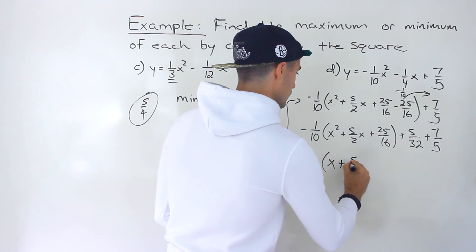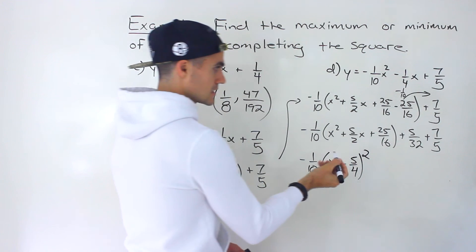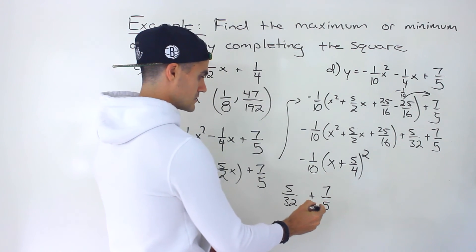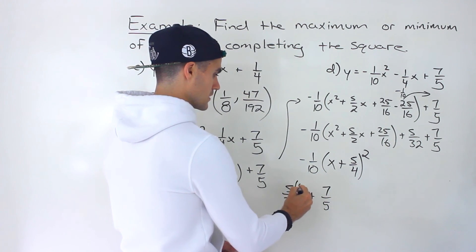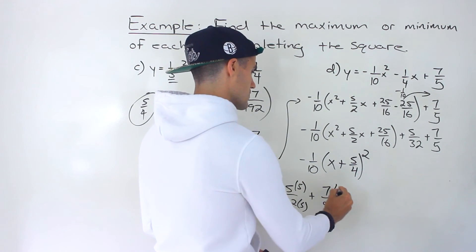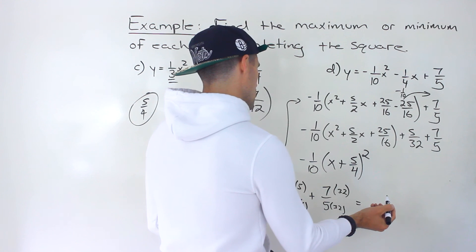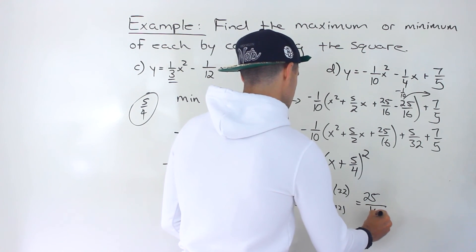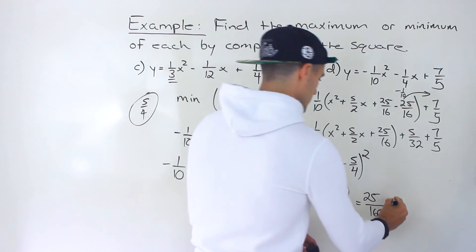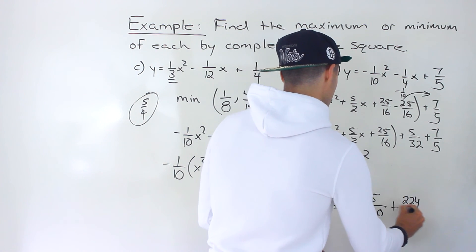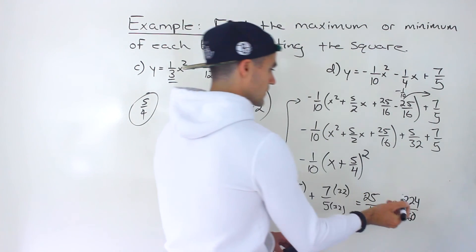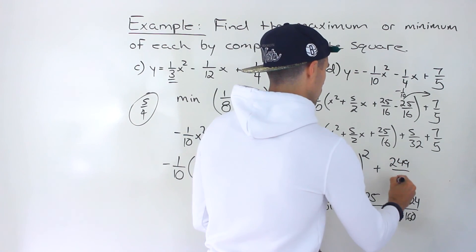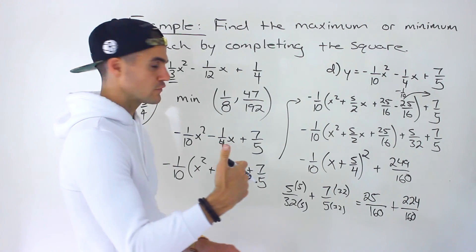Now add five-over-32 plus seven-over-five. Getting a common denominator of 160: five-over-32 becomes 25-over-160, and seven-over-five becomes 224-over-160. Adding: 25 plus 224 gives 249, so we get plus 249-over-160. That fraction doesn't simplify further — the numerator and denominator share no common factor.